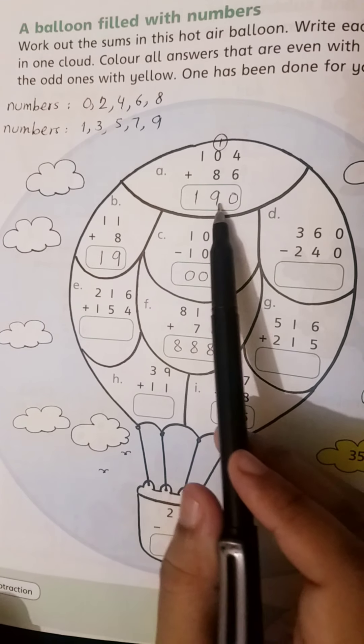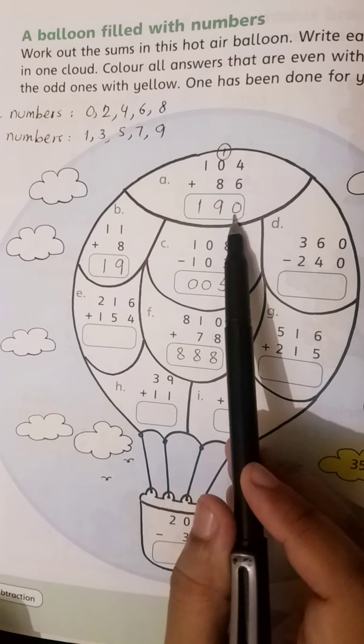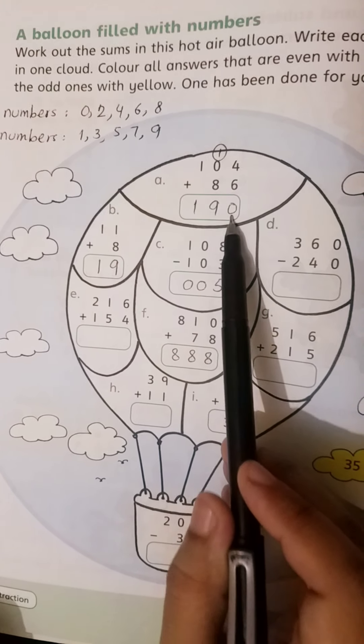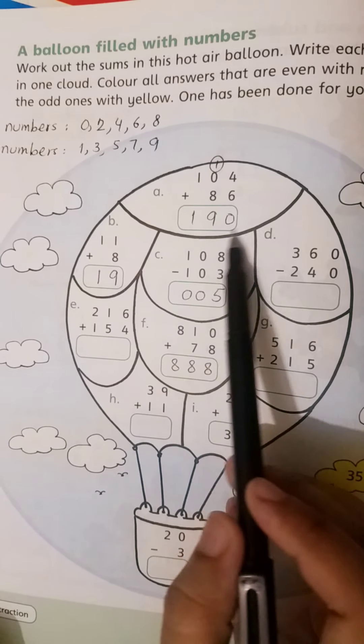Now check this. 190 is an even number because its once place is 0. 0 is an even number, so this number is even.